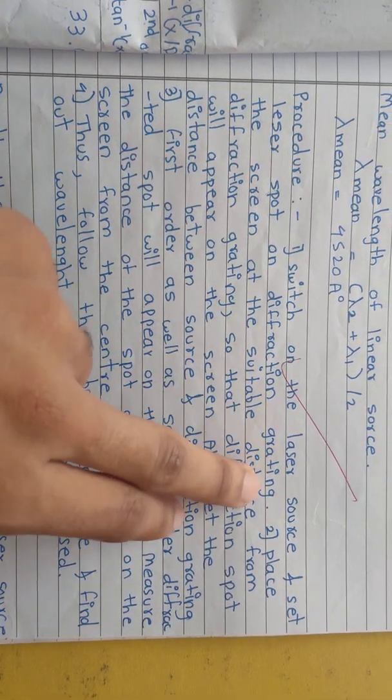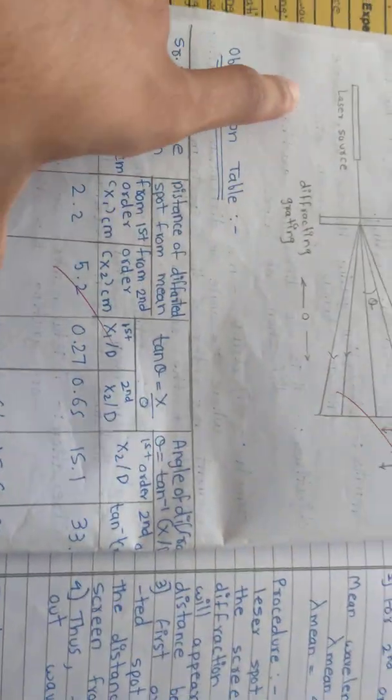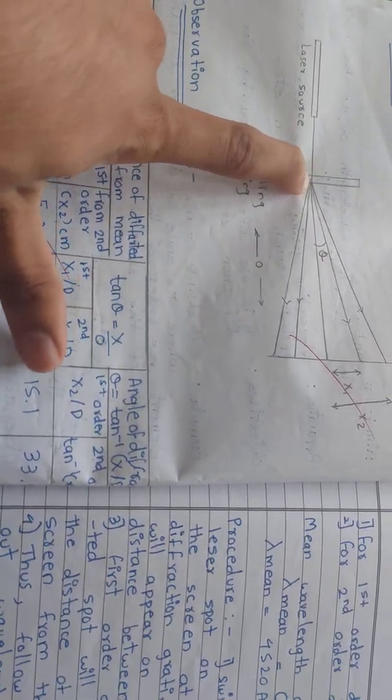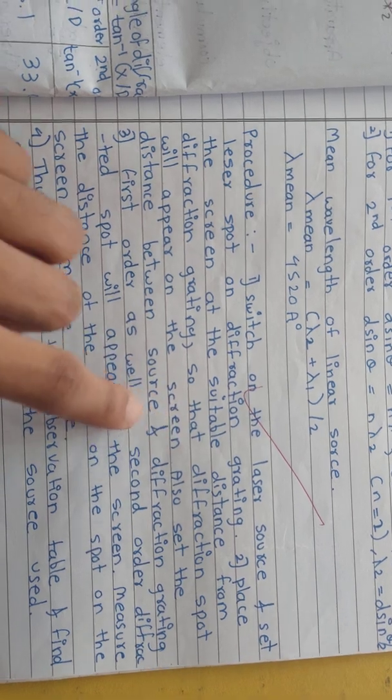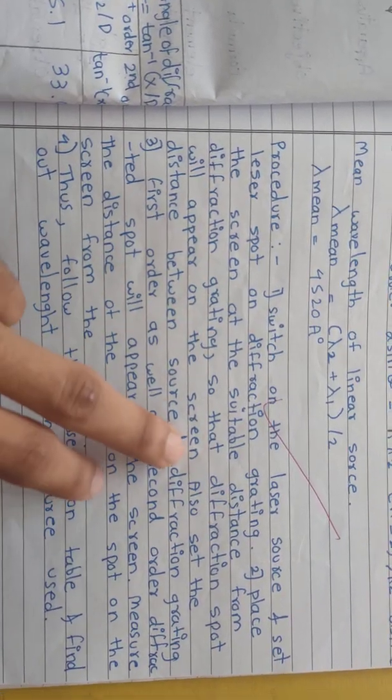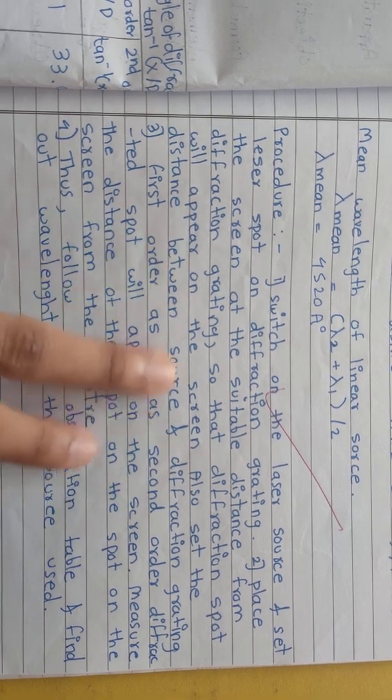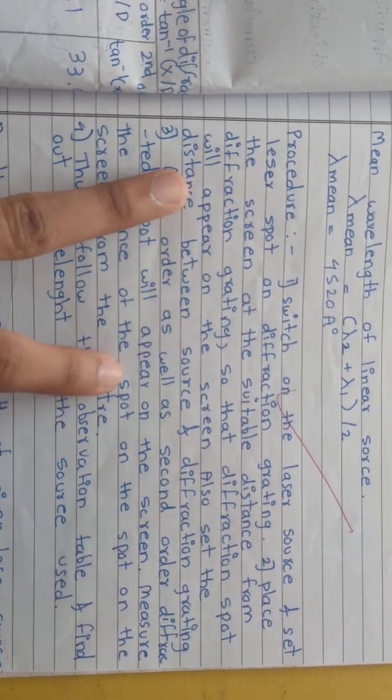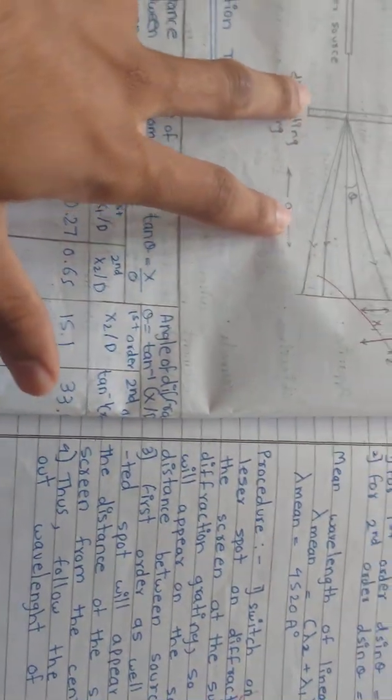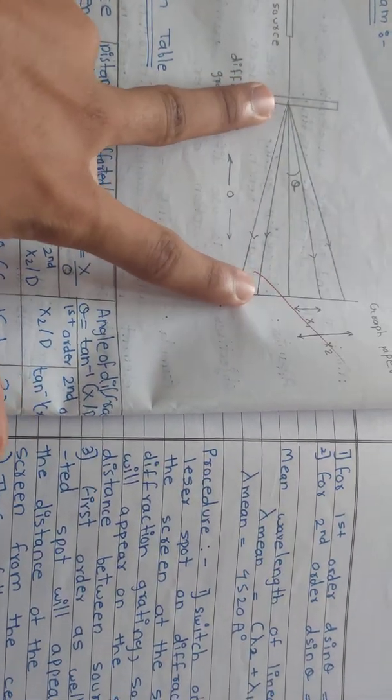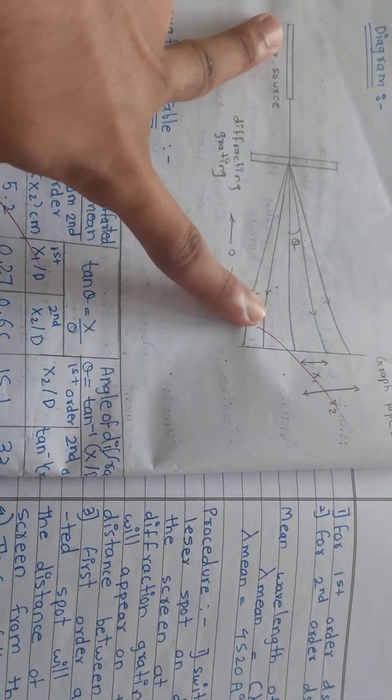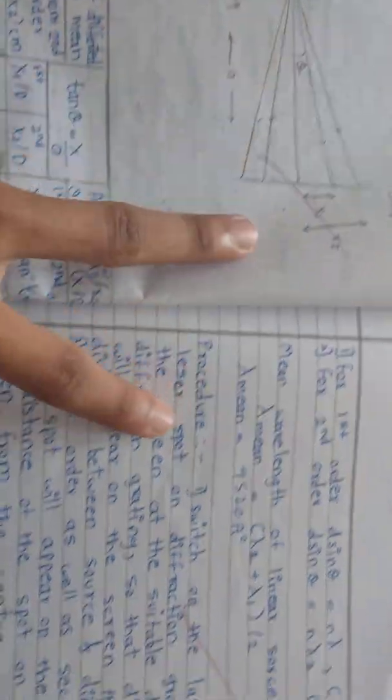Switch on the laser source spot on the diffraction grating. Place the screen at suitable distance from the diffracting grating so that diffraction spots will appear on the screen. Also set the distance between source and diffraction grating, and set the distances to note down centimeters and millimeters.